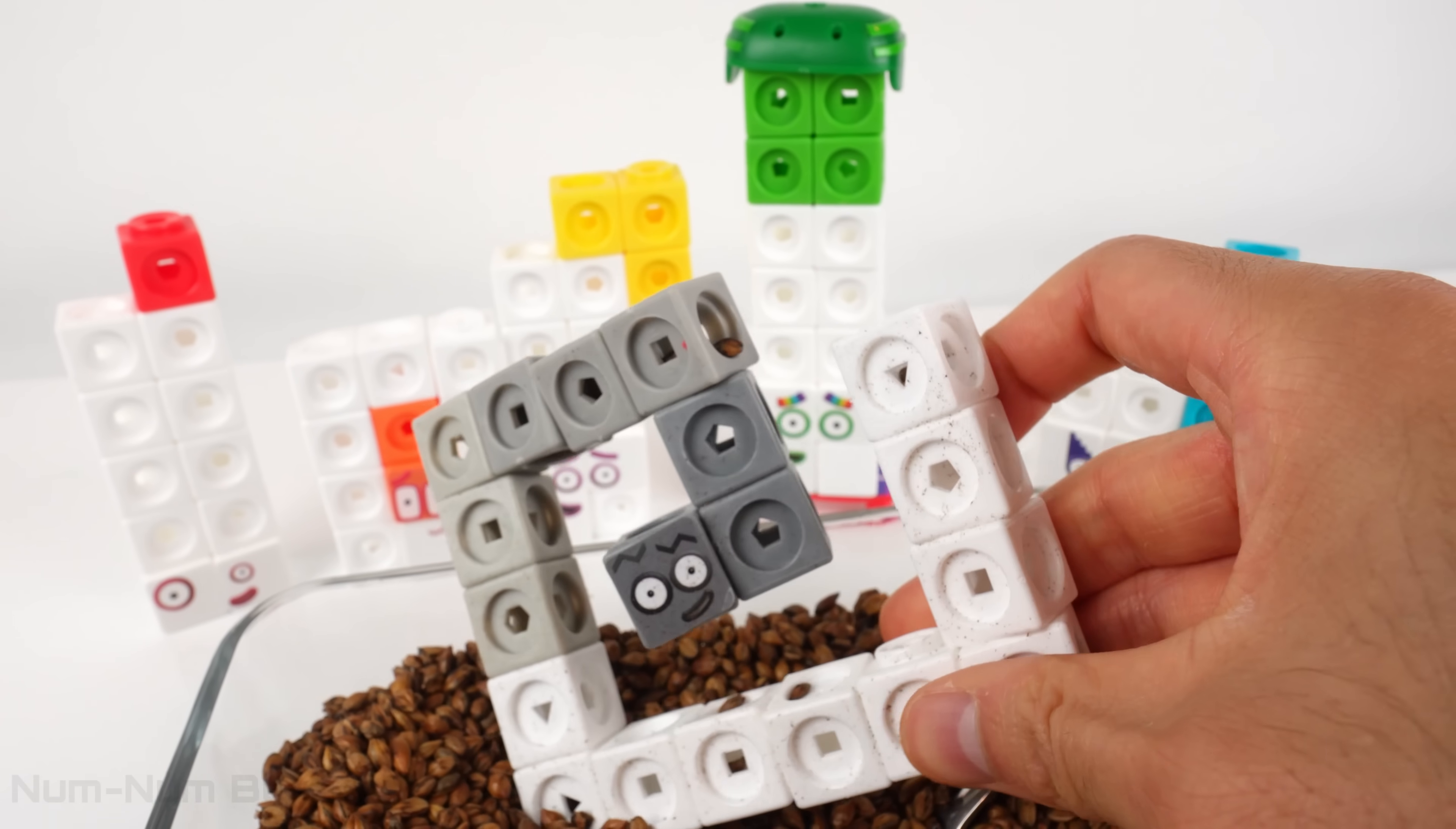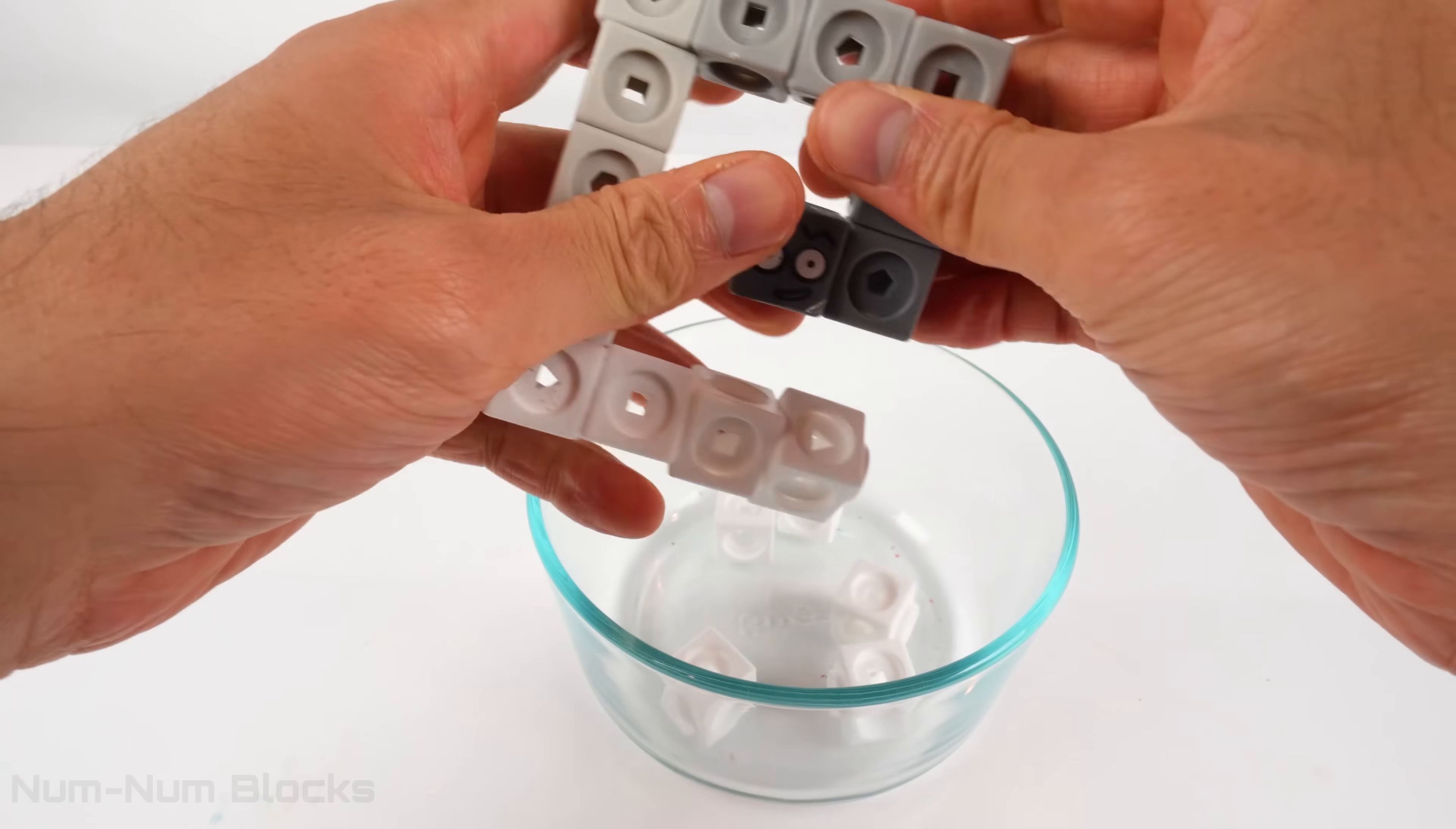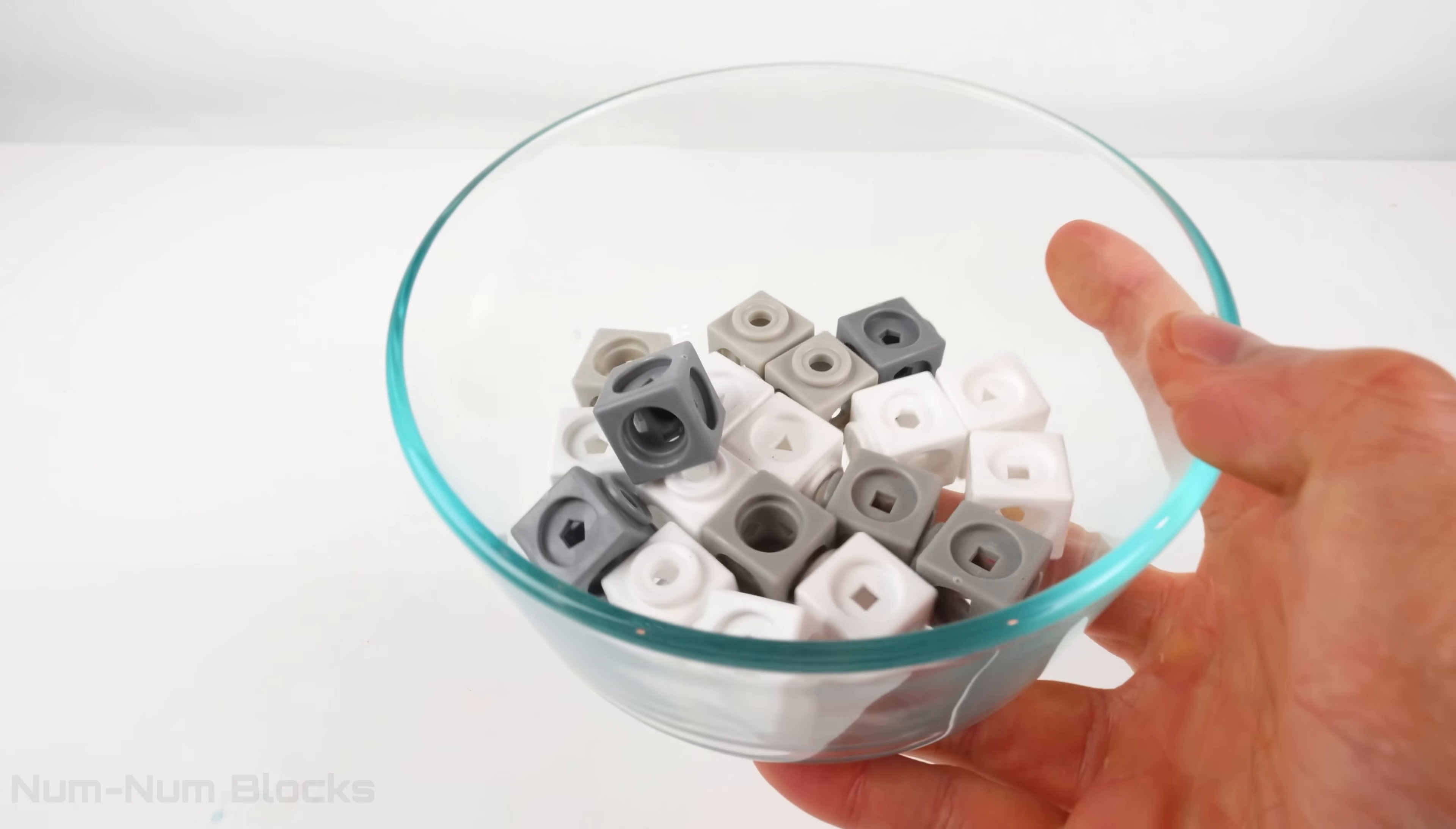Let's reconfigure this number block's shape so we can easily identify its number. Let's break apart this number block into individual blocks. First, I'll remove the white blocks. Now let's remove the grey blocks. Next, we're going to shake up this bowl to mix up all the blocks.